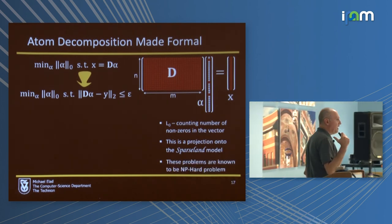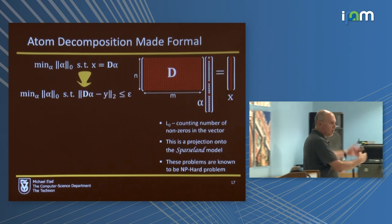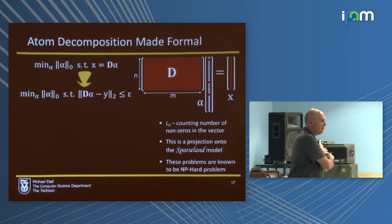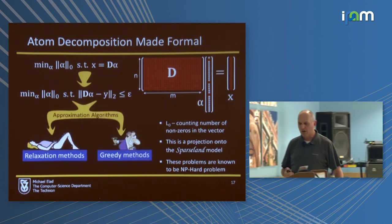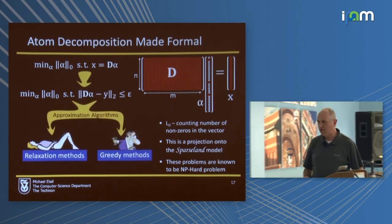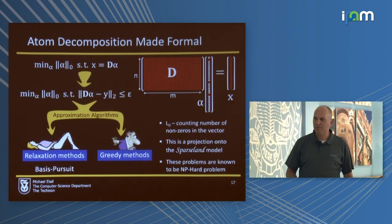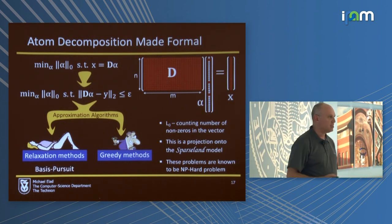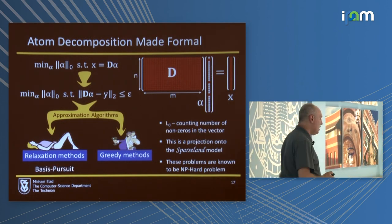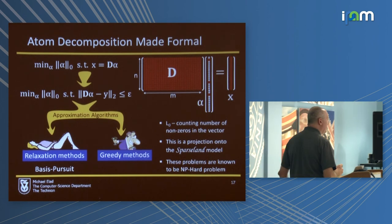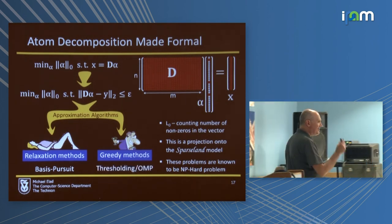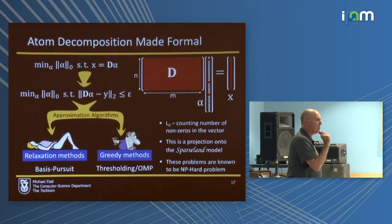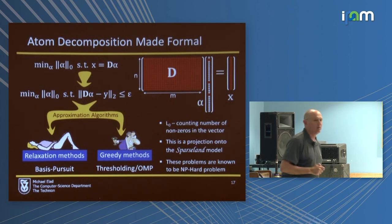These two problems are NP-hard, for the reason I showed you before. So what do you do? You approximate. There are all sorts of approximation algorithms: relaxation-based methods like basis pursuit, greedy methods such as matching pursuit and thresholding.